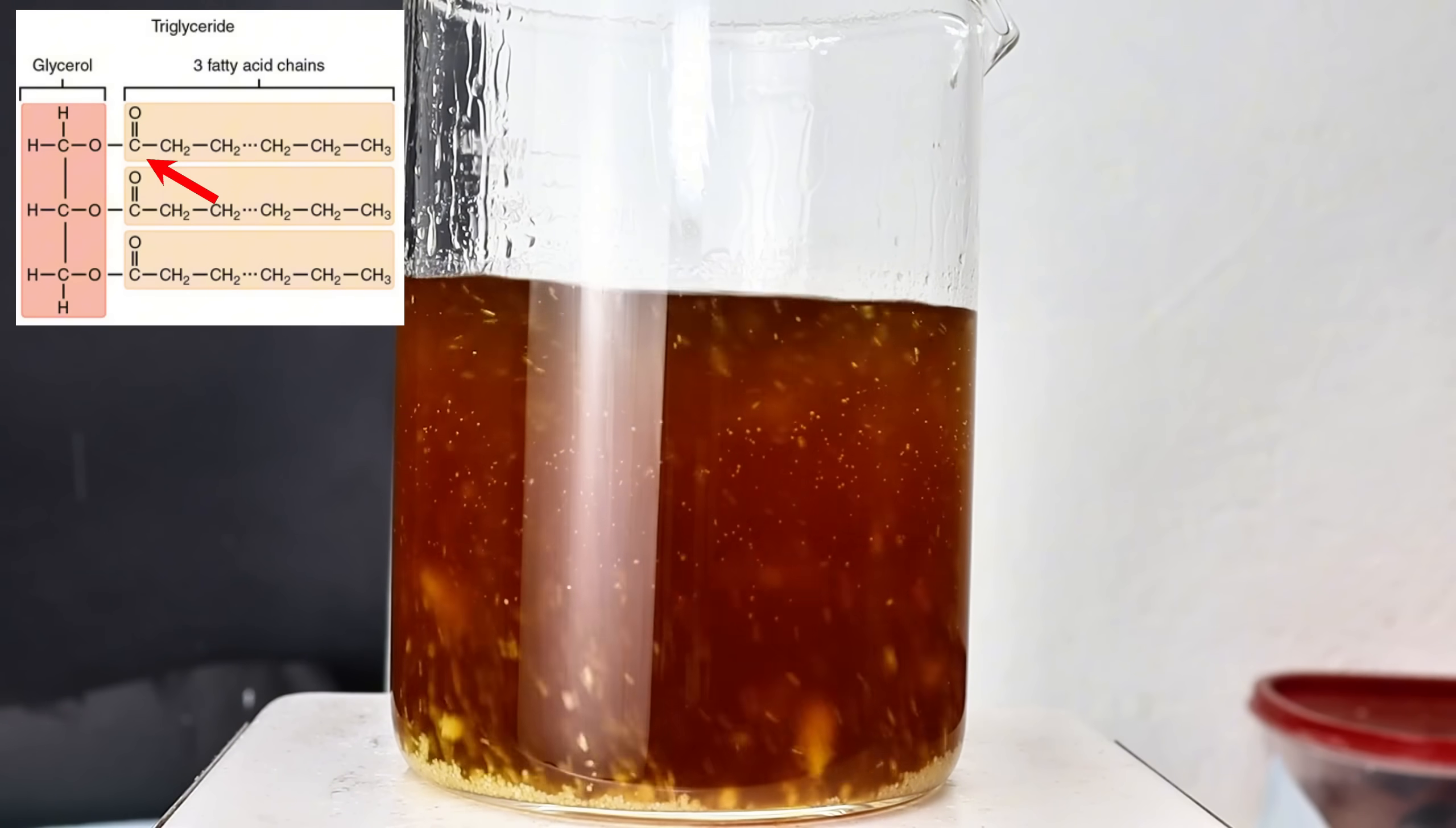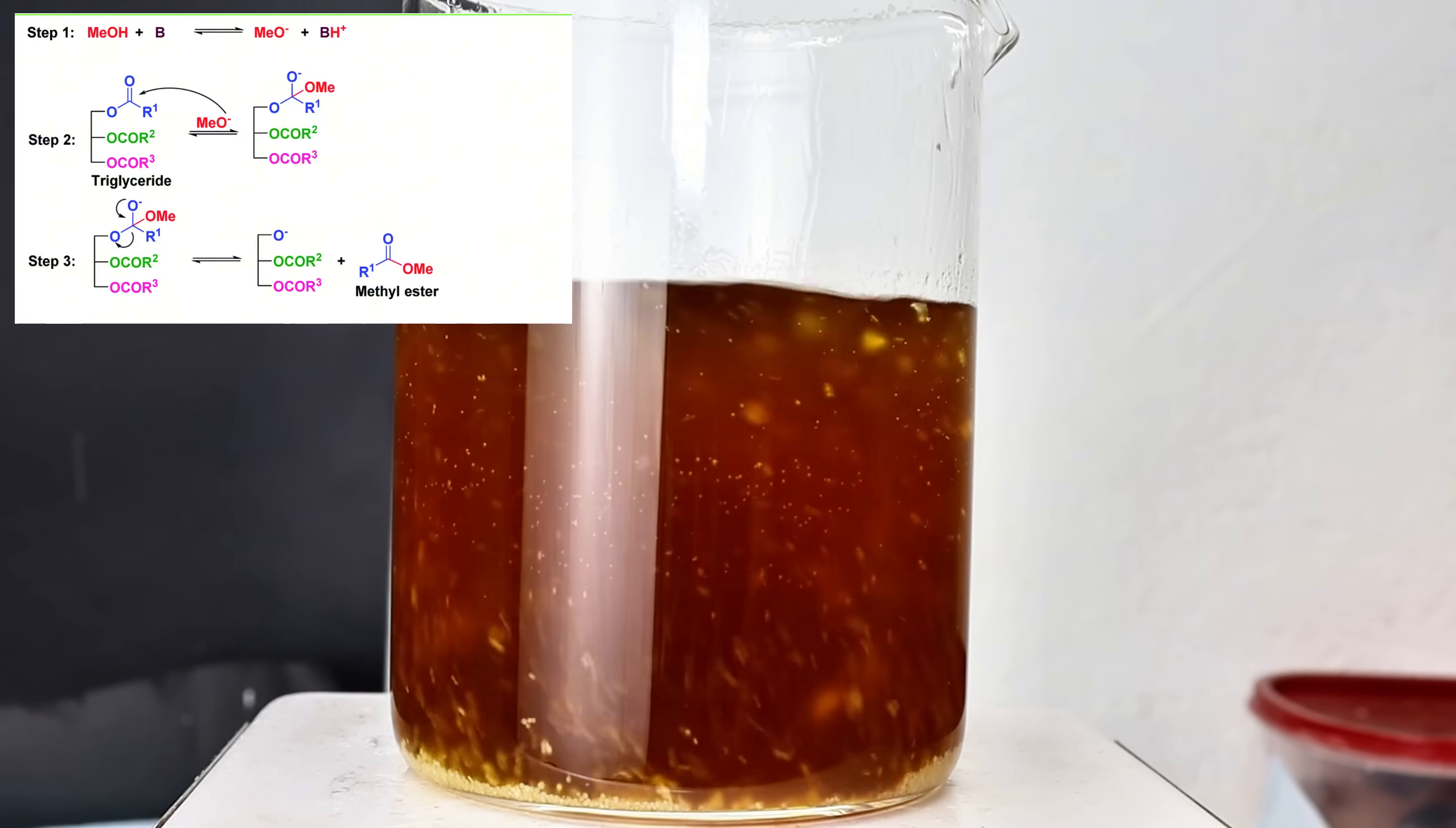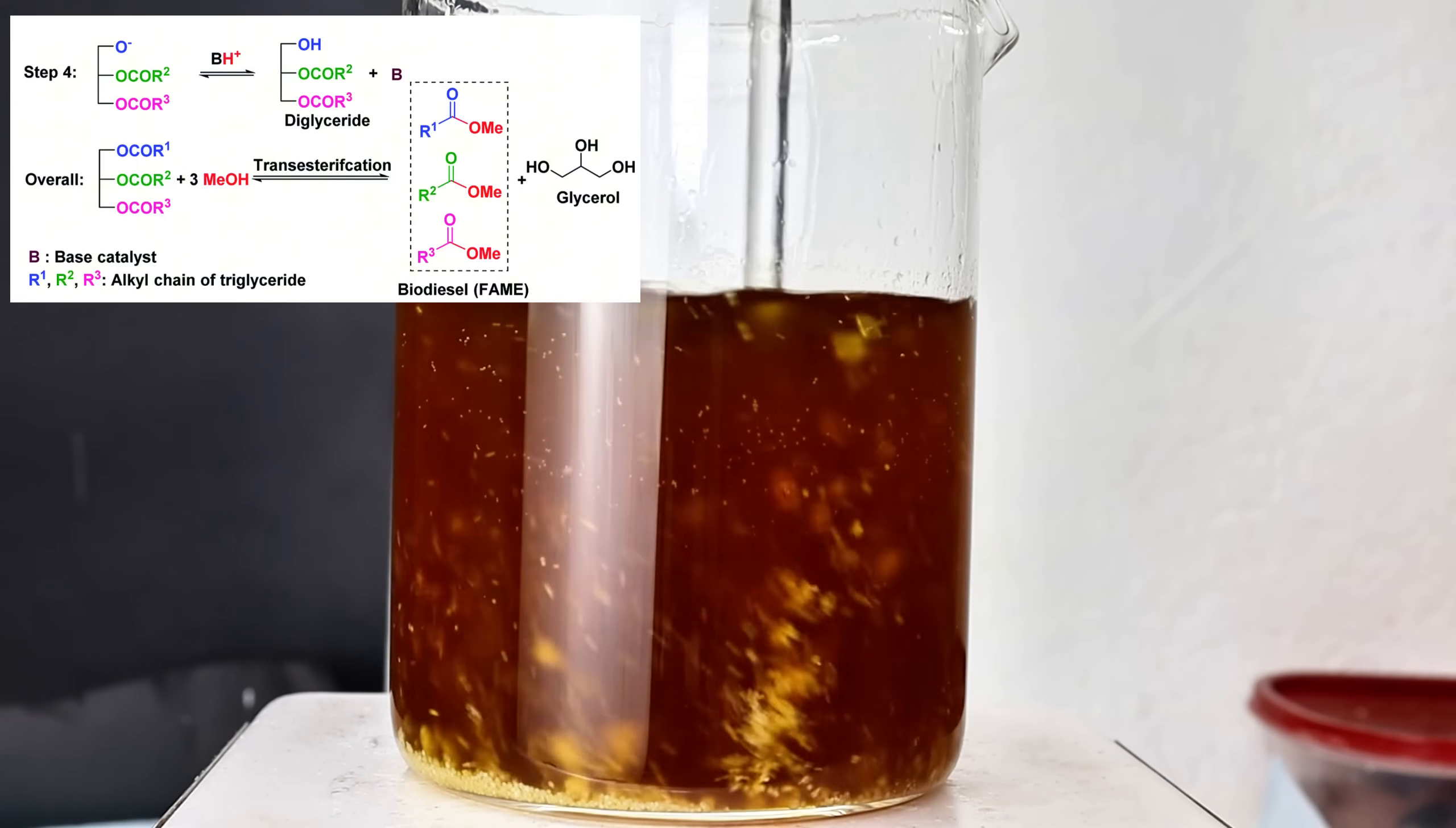This intermediate then rearranges and subsequently collapses, displacing a methyl ester of the first fatty acid. In the final step, the glycerol backbone is protonated by the water molecule produced during the formation of the sodium methoxide, and the process repeats.